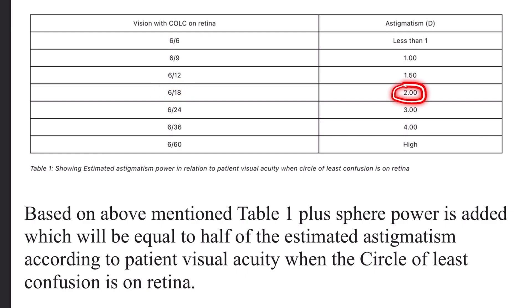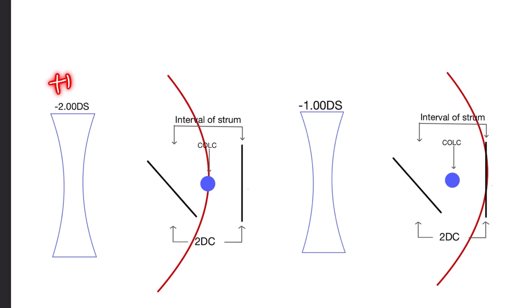You want to take half of the estimated astigmatism, which will be one diopter, and you want to add that to the best vision sphere. As we add plus one here, what it does is bring the whole rays in front of the retina where your back focus will be on the retina, rather than the circle of least confusion being on the retina.